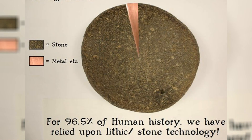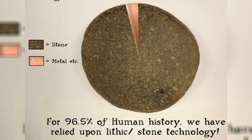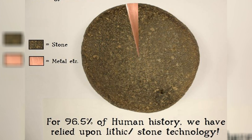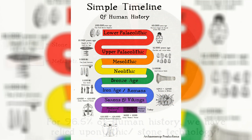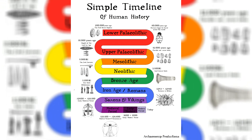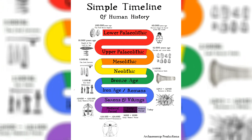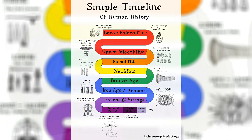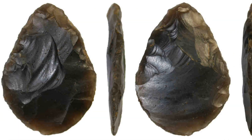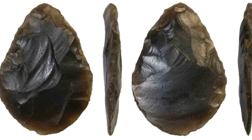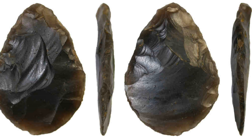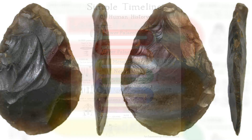Stone tools are important because we, human beings, have relied on them for around 97% of human history. The Stone Ages — the Paleolithic, the Mesolithic, and the Neolithic — account for almost all of humanity's time on this planet. And as you can imagine, over such a huge amount of time, around 200,000 years, people made different types of stone tools for different reasons at different times.